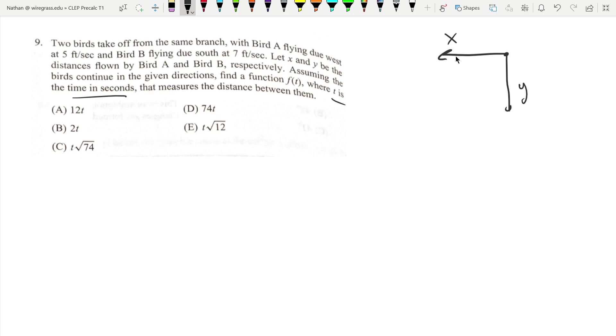If X is the distance that bird A flew, and they flew five feet per second, then X is the same thing as five t. Five feet per second times t seconds.